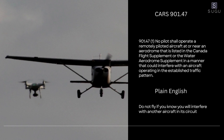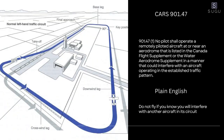Looking at CARS 901.47, no pilot shall operate a remotely piloted aircraft at or near an aerodrome listed in the Canadian Flight Supplement or the Water Aerodrome Supplement in a manner that could interfere with an aircraft operating in the established traffic pattern. In plain English, do not fly if you know you will interfere with another aircraft in its circuit or pattern. A standard established traffic pattern includes the takeoff leg, crosswind leg, downwind leg, base leg, and final approach leg.